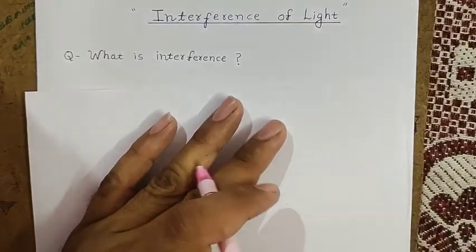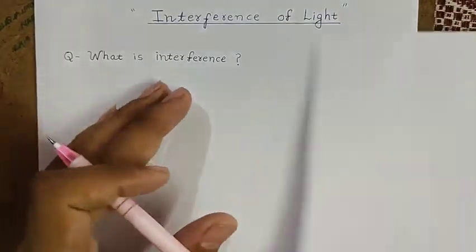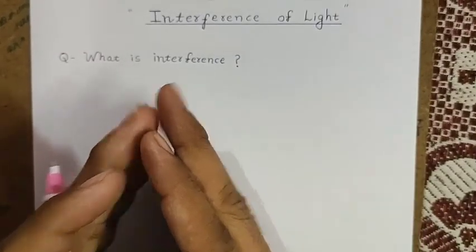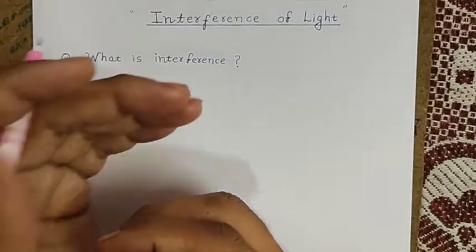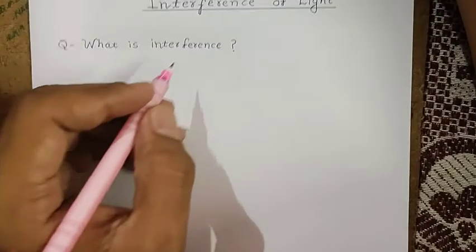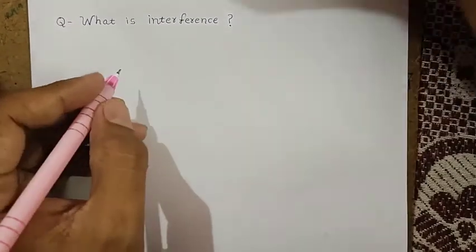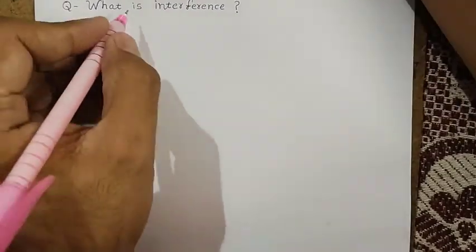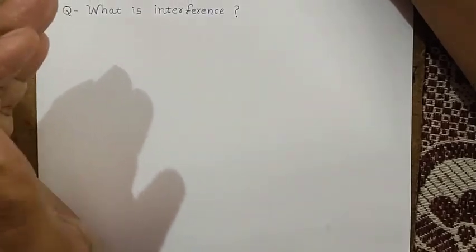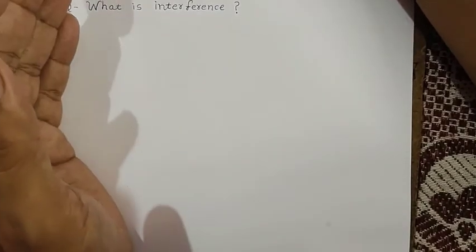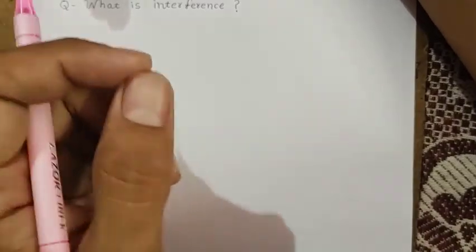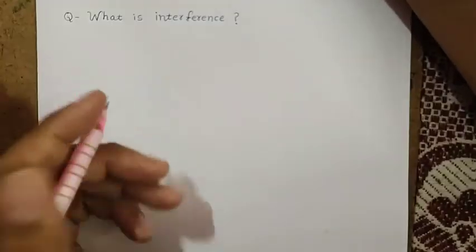First of all, we'll see what is interference. Interference is a phenomenon which is shown by waves. It is not shown by a particle. If anything is showing interference, that means it must be a wave. So it's a phenomenon strictly shown by waves.